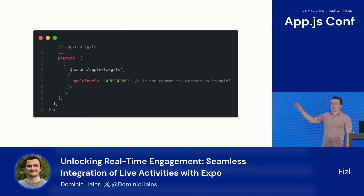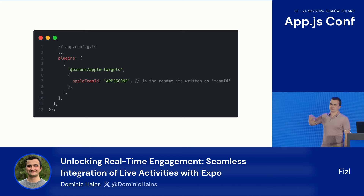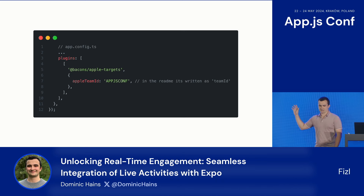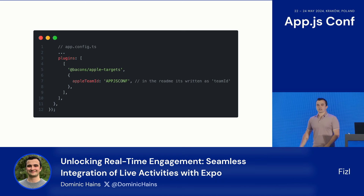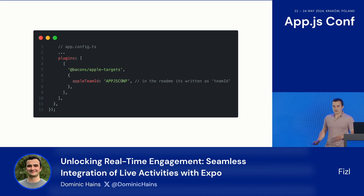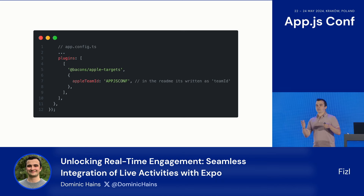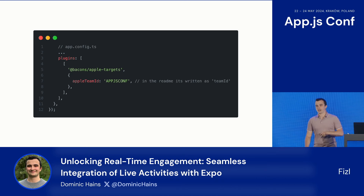This is your standard app config — this is the TypeScript version, but in JSON it's pretty similar. At the end of the plugins, you plug that plugin in and put in your Apple Team ID, which you can find on your Apple Developer website.